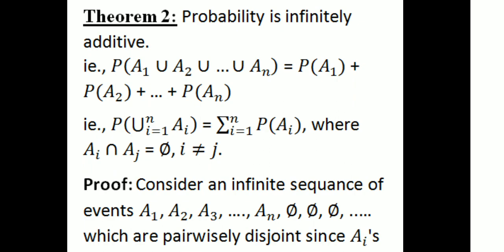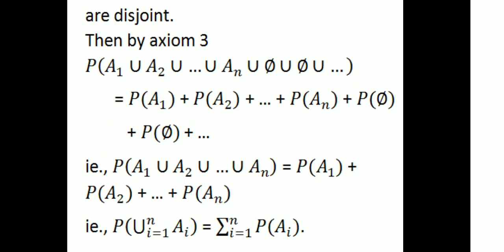Proof: Consider an infinite sequence of events A₁, A₂, ..., Aₙ which are pairwise disjoint. By axiom 3, for disjoint events, P(A ∪ B) = P(A) + P(B). So P(A₁ ∪ A₂ ∪ ... ∪ Aₙ ∪ ∅ ∪ ...) = P(A₁) + P(A₂) + ... + P(Aₙ) + P(∅) + ... That is, P(∪ᵢ₌₁ⁿ Aᵢ) = Σᵢ₌₁ⁿ P(Aᵢ), in sigma notation.